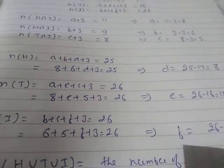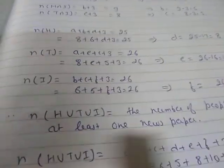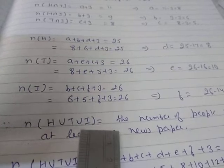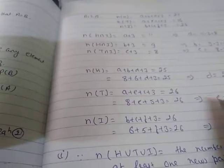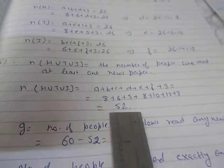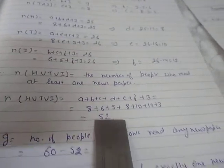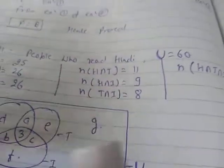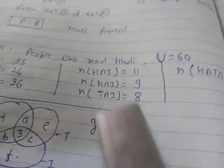The number of people in H union T union I is a + b + c + d + e + f, which equals 52. The total number of people is 60, so 60 minus 52 equals 8. This value of 8 is region g — the people who read none of the newspapers.